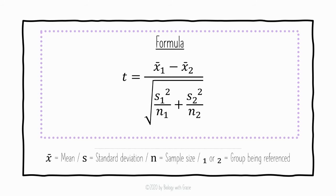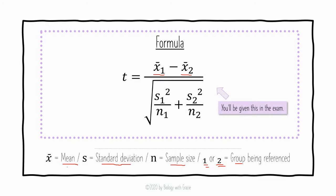This is the formula for the Student's t-test. It looks very confusing but it's actually fairly simple. t equals the mean of group one minus the mean of group two, divided by the square root of the standard deviation of group one squared divided by the sample size of group one, added to the standard deviation of group two squared divided by the sample size of group two. You will be given this formula in the exam, so you just need to understand it and know how to use it.